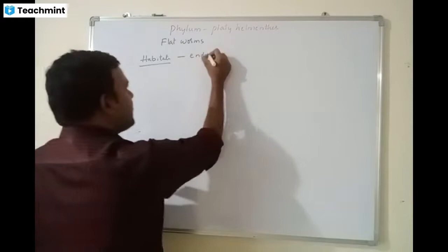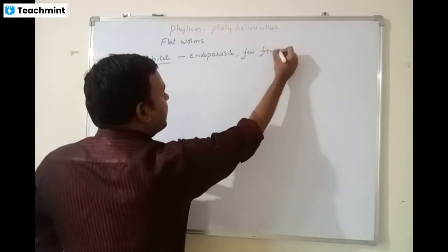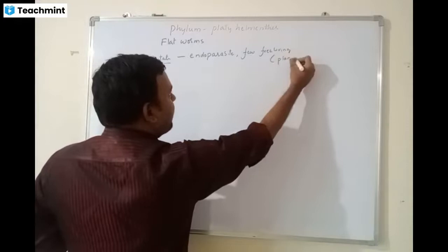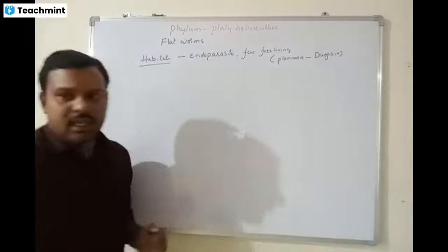Nematihelminthes also have a majority of endoparasites, and very few are free-living. An example of a free-living Platyhelminthes is Planaria, whose scientific name is Dugesia. Very important.